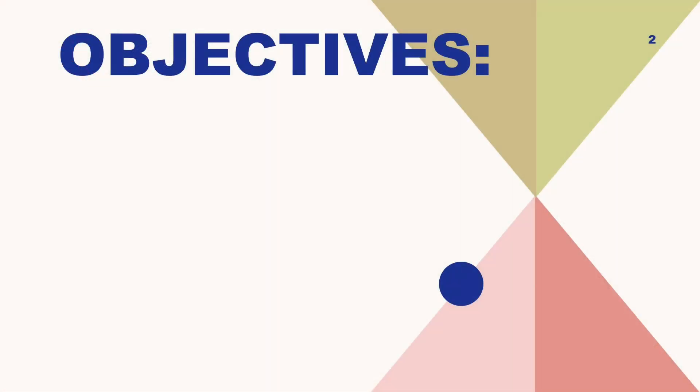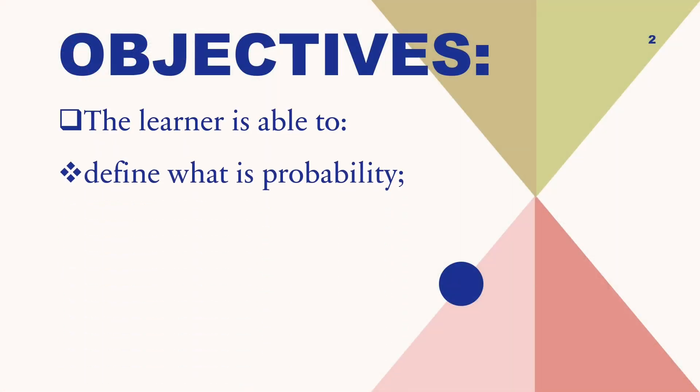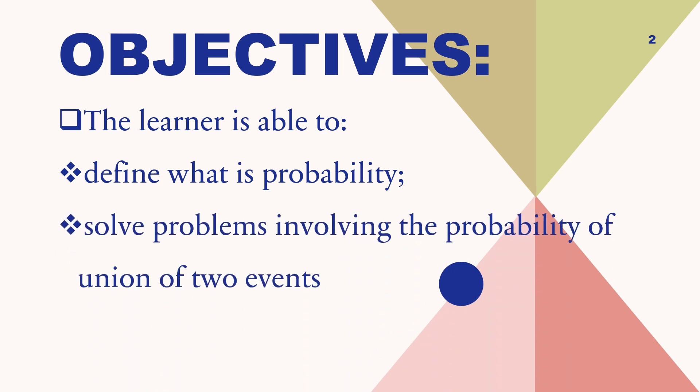Here are the learning objectives. The learner is able to define what is probability and solve problems involving the probability of union of two events.